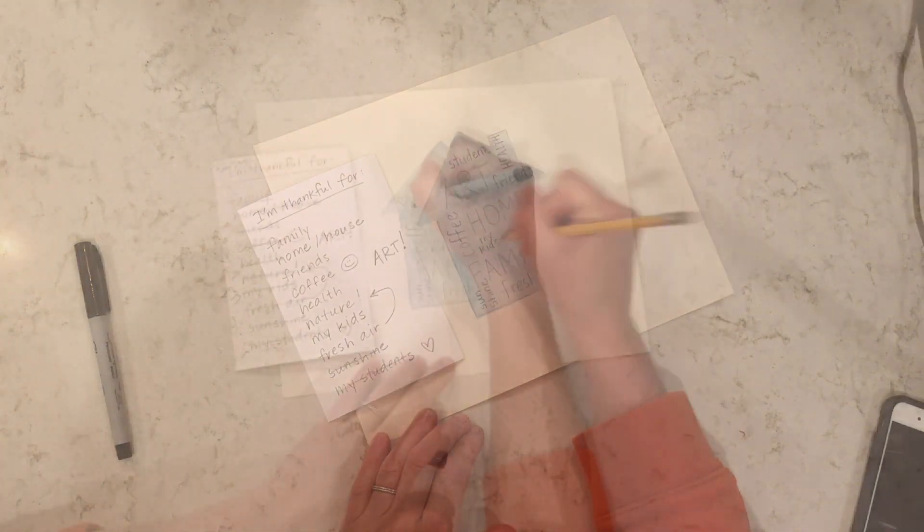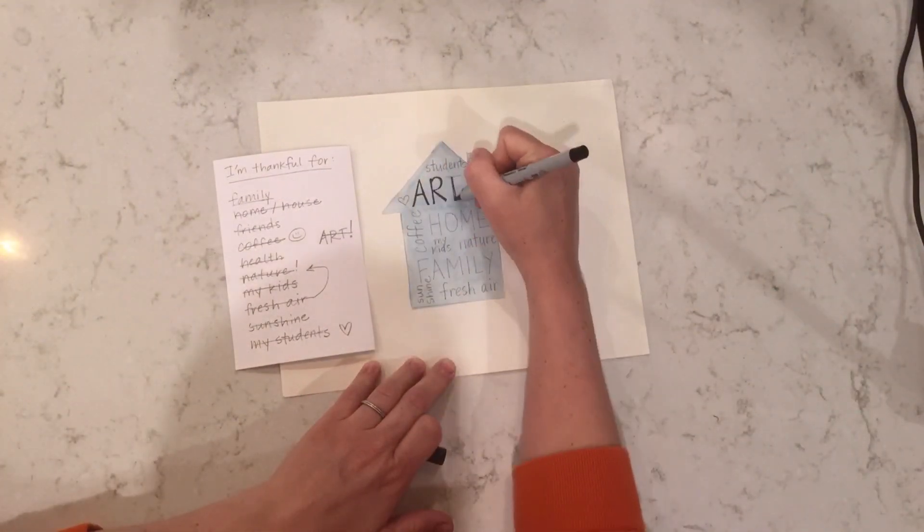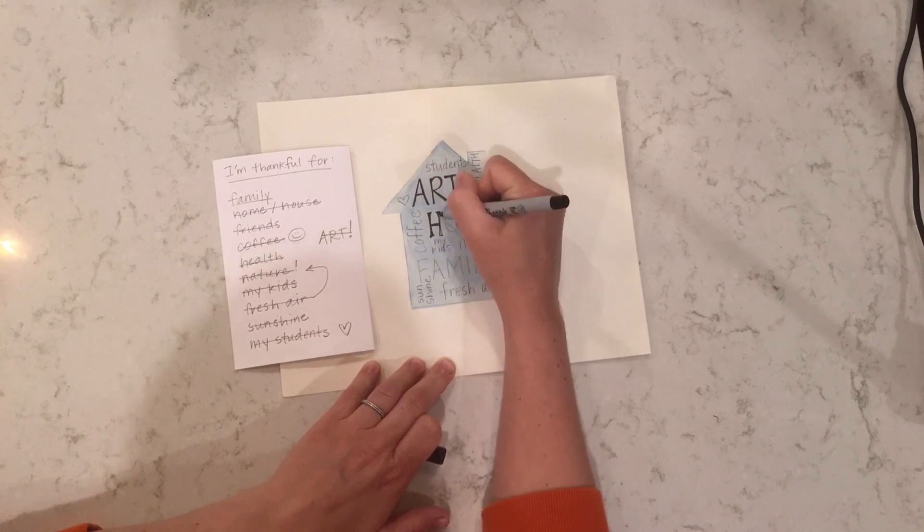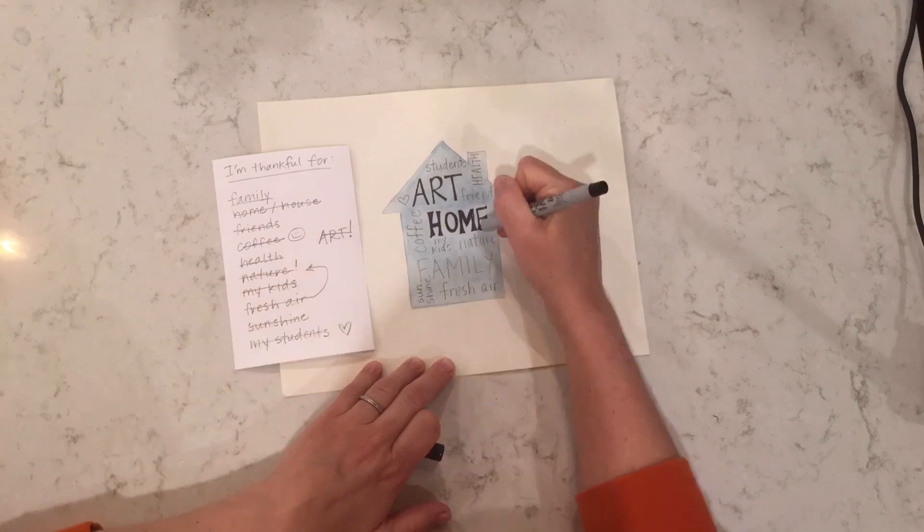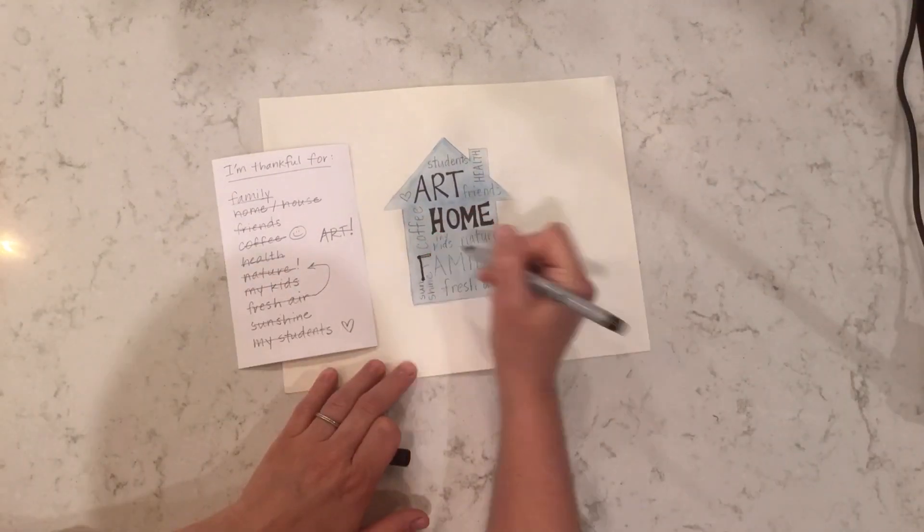When you're happy with your plan and you've used all of your words, use a sharpie or a pen to outline all of your words, making those big, important words more bold.